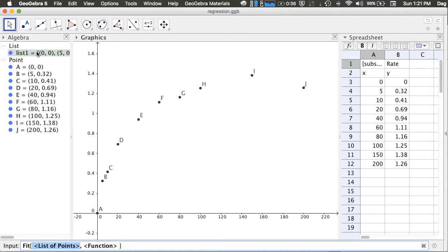The list of points will be the list 1, which includes all these 10 points you have just entered into GeoGebra. As for the function, you have to define it yourself. In this example, our function is k1, where k1 is a constant, times x, over k2, where k2 is another constant, plus x. Then you can press the Enter key.